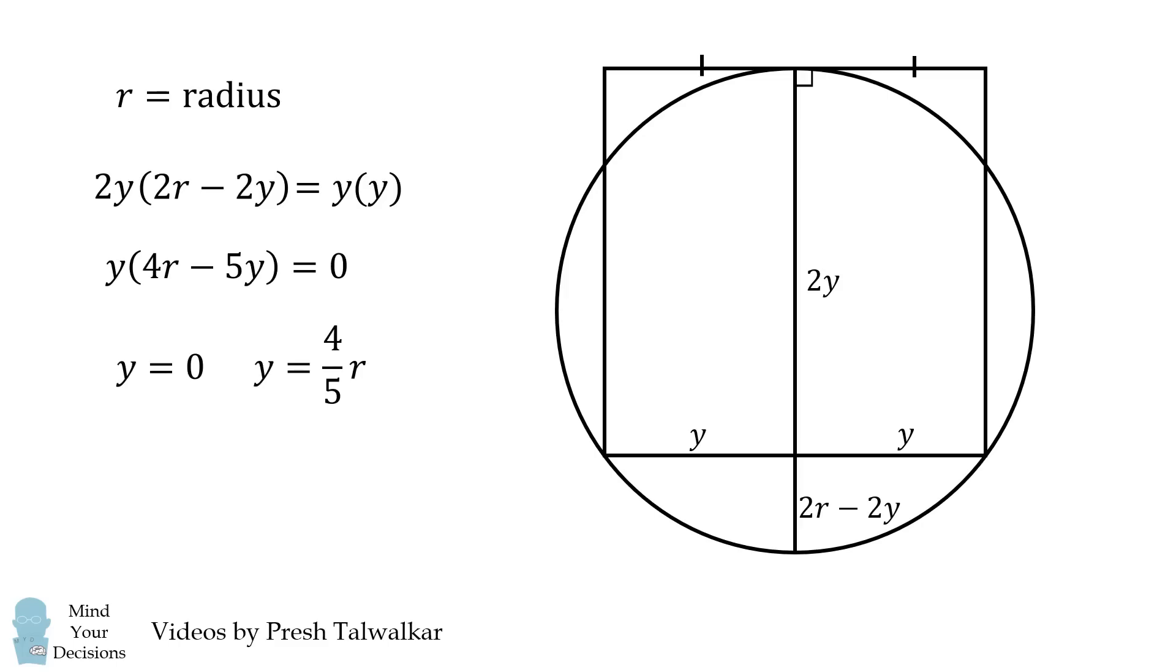Since we want y to be a positive value, so the square side has a positive length, we reject y is equal to 0. Therefore, y is equal to 4 fifths r, which means r is equal to 5 over 4y.